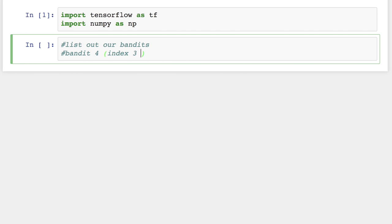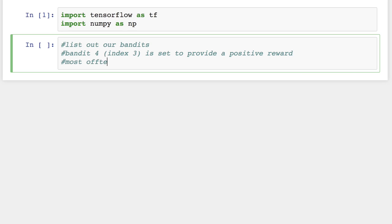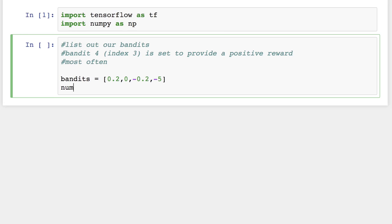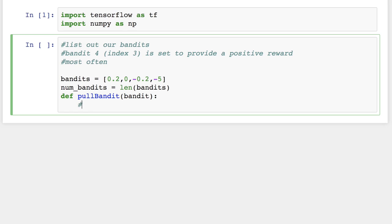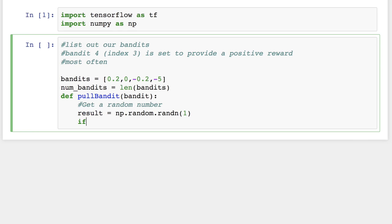So we'll define our bandits as a list, and each of these values will help decide if a reward is given when pulled. The lower the bandit number, the more likely we'll get a positive reward. The higher the bandit number, the more likely we'll get a negative reward. We want our agent to choose the bandit that will give that reward, and we'll initialize a variable for storing the total number.